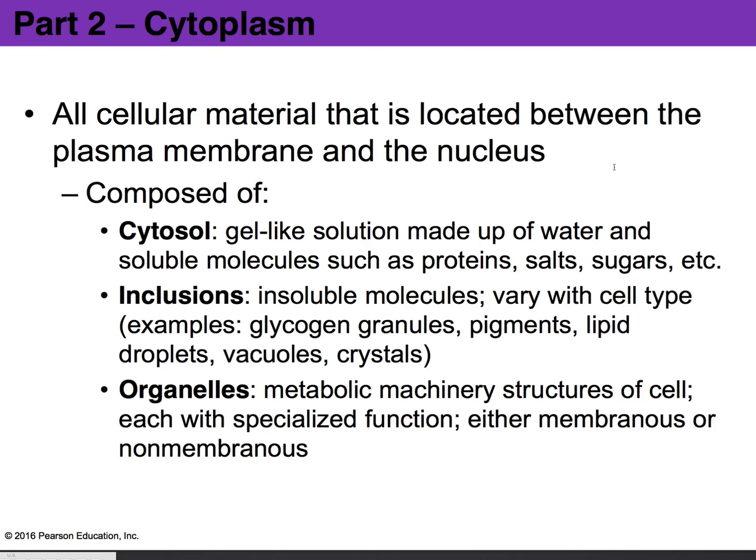Then we have organelles — the metabolic machinery that keeps the cell functioning. Depending on the cell, you're going to find different types of organelles. These organelles can be either membranous or non-membranous, meaning they either have a membrane or lack one. They're very specialized and have very specific functions they perform in order to keep that cell living and functioning, which makes each cell unique.